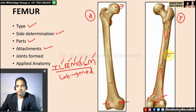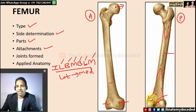For adductor magnus: the axial (hamstring) head goes to the adductor tubercle, while the adductor part attaches on the linea aspera. The medial supracondylar line gives attachment to the medial head of gastrocnemius. The lateral supracondylar line gives attachment to the lateral head of gastrocnemius and plantaris muscle. On the lateral aspect is the attachment of the tendon of popliteus muscle.